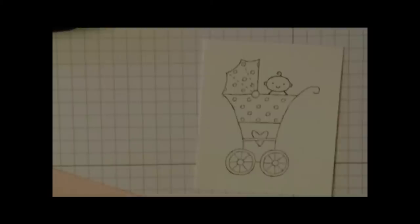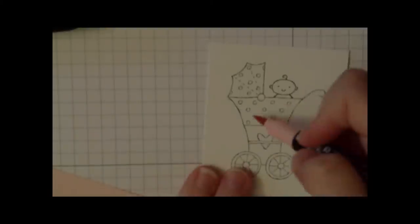And we are going to now color him in. To color him in, we're going to use Pretty in Pink and color in the carriage. And to make this faster, I've already done a little coloring ahead of time. So I only have this little piece here left to get with the pink.